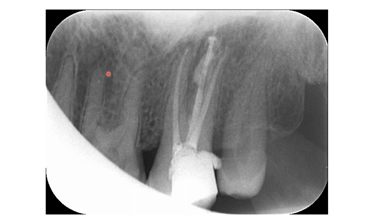The lamina dura is lost here but the PDL — the thing that does not disappear as I said — is still traceable. Again for the mesiobuccal, then go to the palatal from here and follow up. This filling is over-extended — this is the apex and this is the over-extension of the filling.